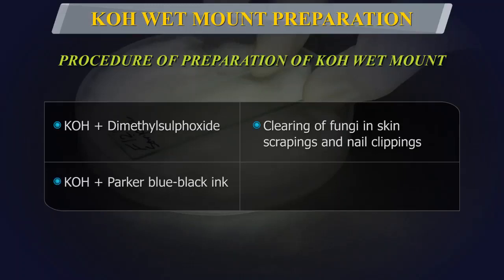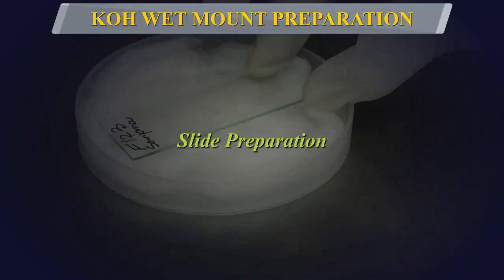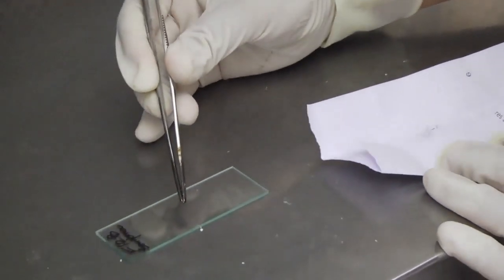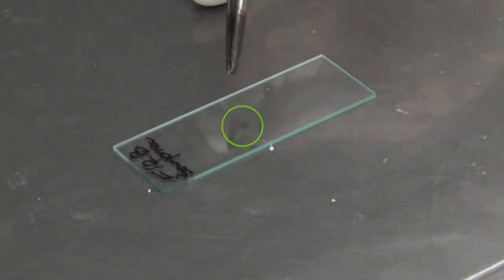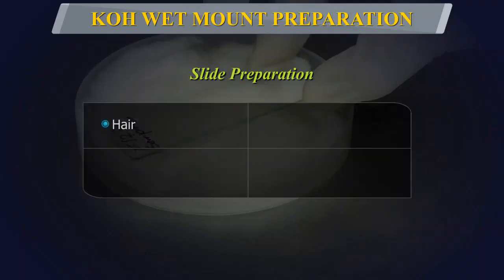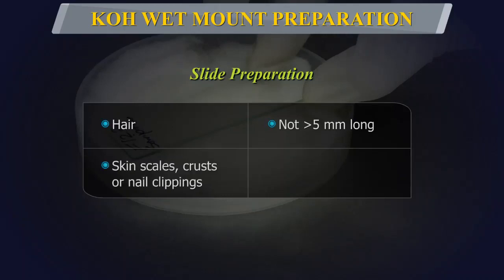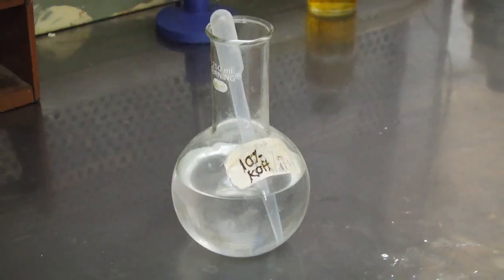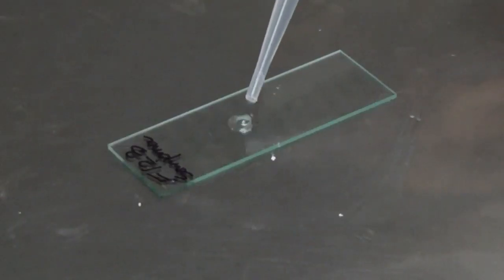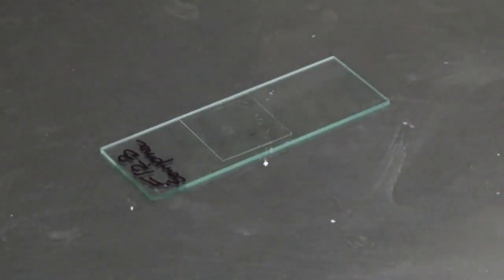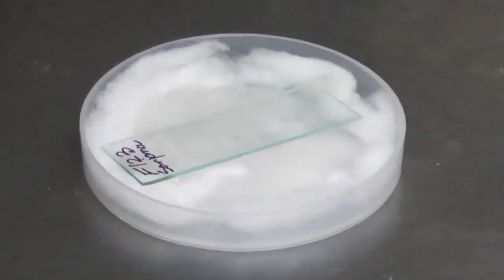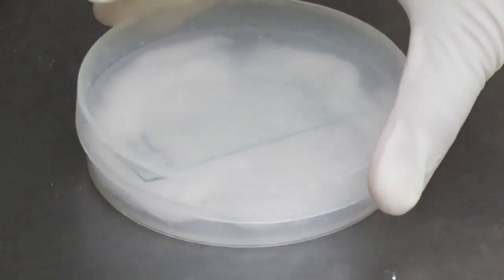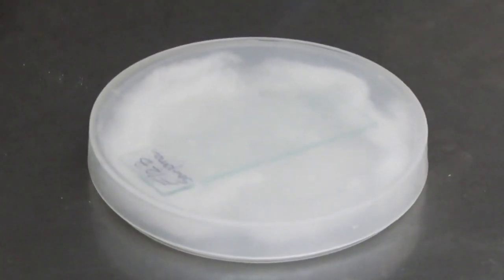KOH can also be mixed with an equal part of Parker blue-black ink for staining of fungal elements. Transfer the specimen with sterile forceps onto a labeled slide. For better clearing, hair should not be more than 5 millimeters long, and skin scales, crusts, or nail clippings should not be more than 2 millimeters across. Add a drop of KOH solution on the specimen, cover with a cover slip, and place the preparation in a sterile petri dish lined with damp cotton wool or filter paper to prevent drying.